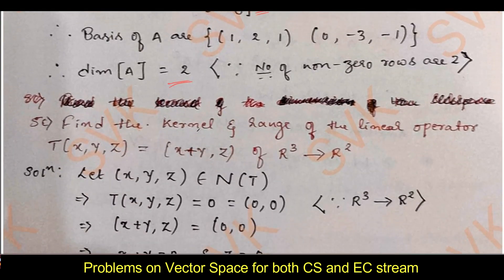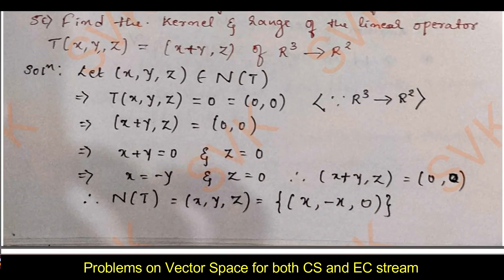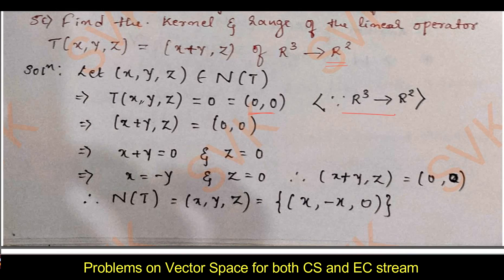Moving on to question number 5c: find the kernel and range of the linear operator T(x, y, z) = (x+y, z) from R³ to R². The given transformation maps from 3 dimensions to 2 dimensions. To find the kernel, let (x, y, z) belong to the null space of T. Therefore T(x, y, z) = (0, 0). Since T(x,y,z) = (x+y, z) = (0, 0), equating each coordinate gives x + y = 0 and z = 0.